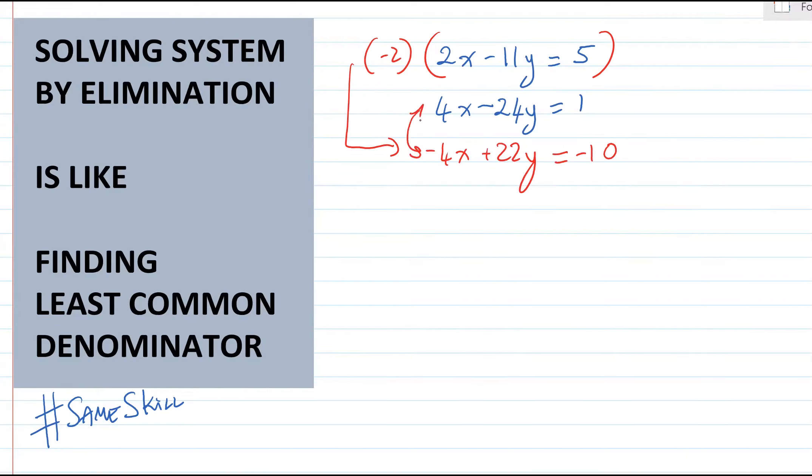We have our negative 4x and positive 4x. Add side by side and x is eliminated. We can solve the rest of it.